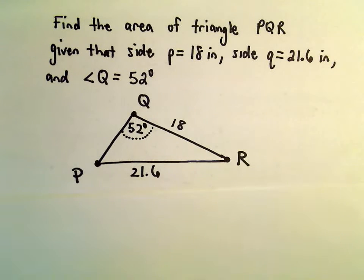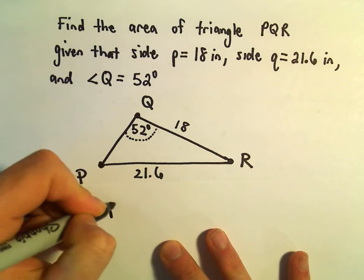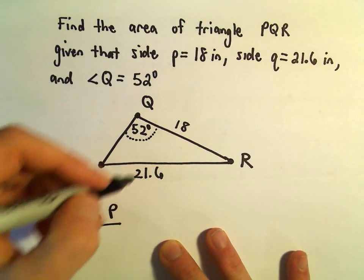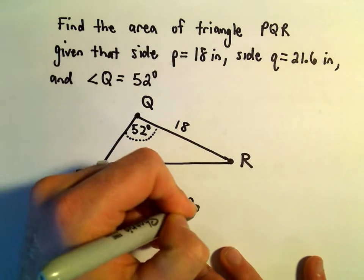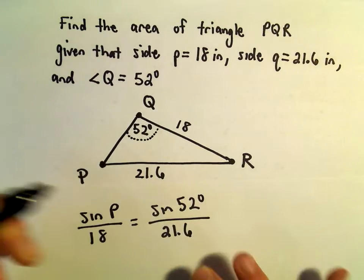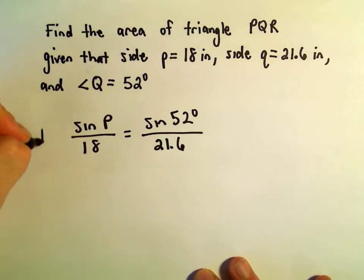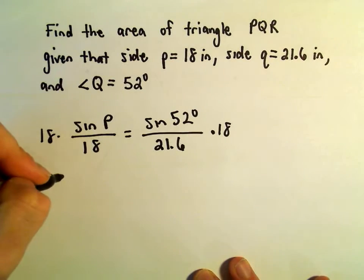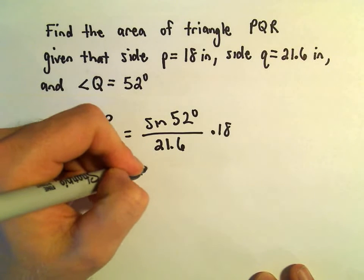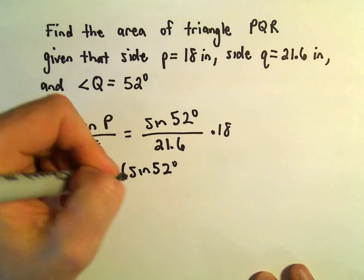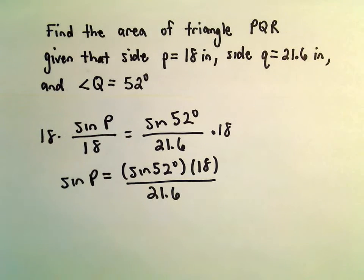Alright, so we could say sine of angle P over 18, that's going to equal sine of 52 degrees over 21.6. So all I'm going to do here is just multiply both sides by 18, and we'll get sine of P is going to be sine of 52 degrees times 18 over 21.6.